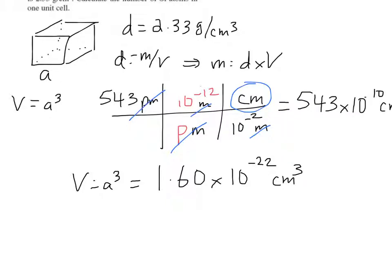So we want to find our mass, and we know that mass is density times volume. So to find the mass then, we just take our density, 2.33 grams over centimeters cubed, and we multiply by the number of centimeters cubed above, 10 to the minus 22.